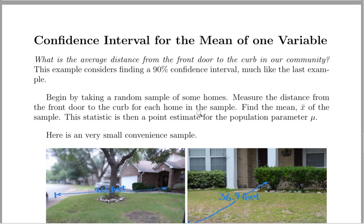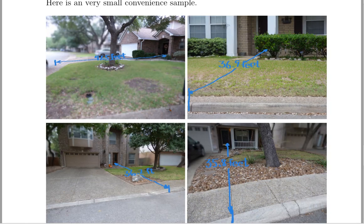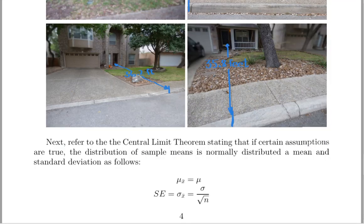There are some real similarities when you start looking at the confidence interval for the mean of one variable. So, maybe a sample question would be, what is the average distance from the front door to the curb in our community? So, here are some sample measurements of a very small, convenient sample.